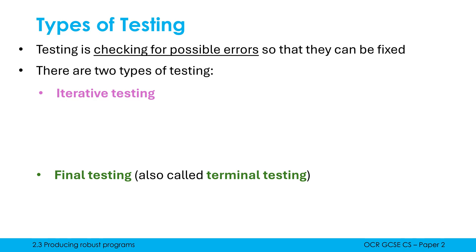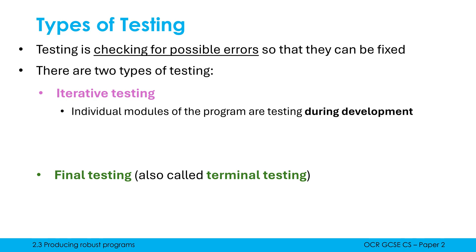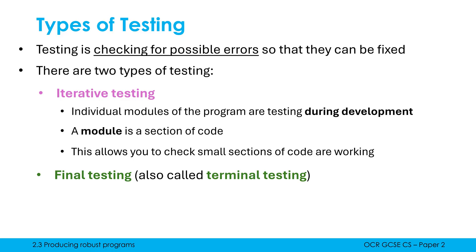So what are the differences between these two types of testing? Iterative testing is done during development, and you are testing individual modules of the program. A module is just a section of code — this could be a sub-program or a couple of sub-programs, maybe 50 or 100 lines. It's not a massive bit of code; when you consider that a video game could be a few million lines of code, we're talking a relatively small chunk at a time, written by one person or maybe a couple of people.